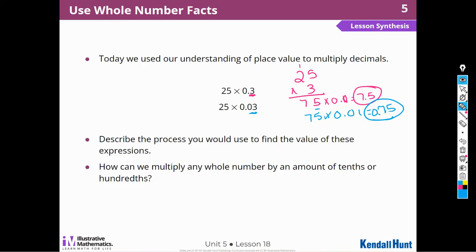How can we multiply any whole number by an amount of tenths or hundredths? Find the whole number, multiply by the number of tenths or hundredths, and multiply that result by one-tenth or one-hundredths. So, I can multiply any whole number by this whole number, and then multiply it by its place value.